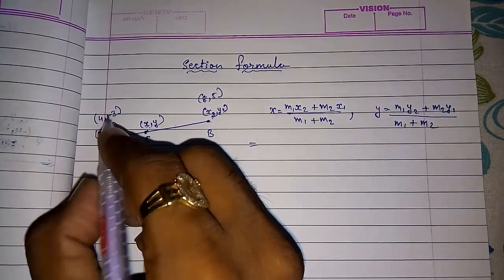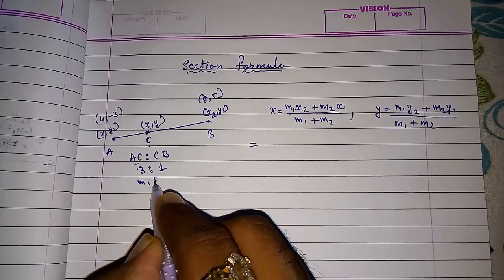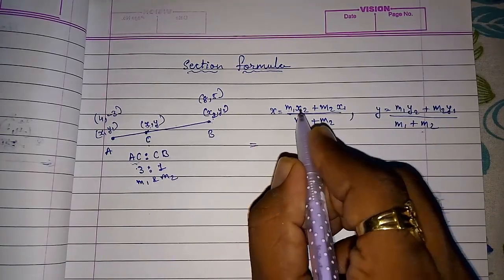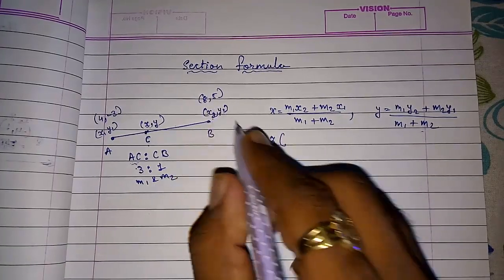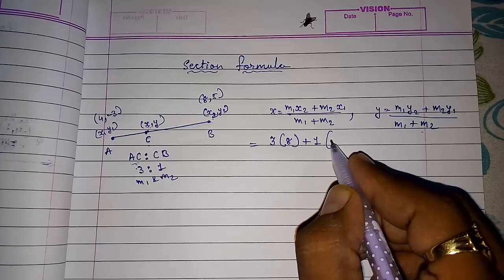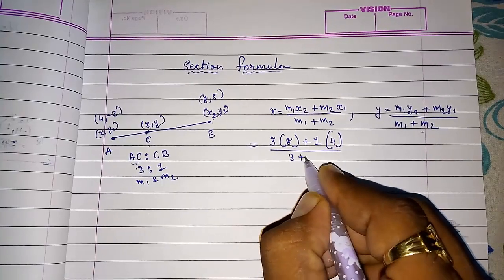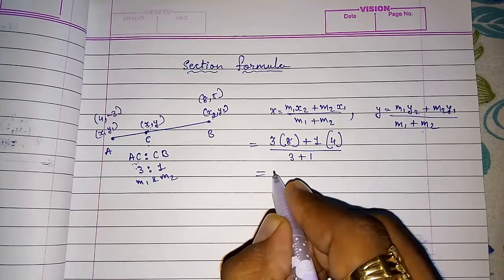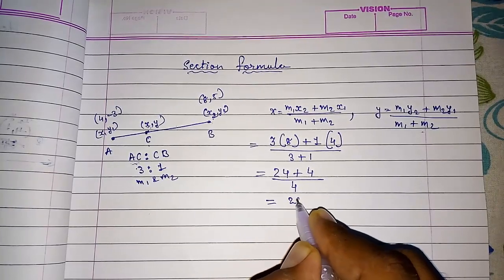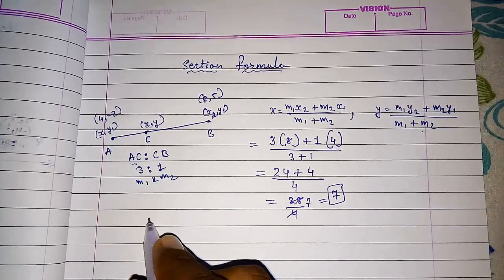First we know this is X1, this is Y1, this is X2, this is Y2, and the names of this ratio is M1 and M2. Now we are keeping in the formula. M1 that is 3, X2 that is 8, plus M2 that is 1, X1 that is 4, then M1 plus M2, 3 plus 1. It is 3 times 8 is 24 plus 1 times 4 is 4 by 3 plus 1 is 4. So we are getting 28 by 4, that is 7. So your abscissa or this X is 7.